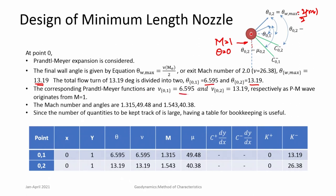The corresponding Prandtl-Meyer functions are also 6.595 and 13.19. Delta-theta equals ν₂ minus ν₁, but since Mach number is 1, ν₁ is 0. Therefore, ν₂ equals delta-theta, and since theta is also 0 initially, ν₂ equals theta — basically ν₂ is theta. We are considering that the half height of the nozzle at the throat is 1, and you can scale these coordinates once you get the results. We are solving both for x and y, as well as the flow properties at each point; it becomes very difficult to keep track of these various quantities, so it is useful to always have a table when doing it by hand.